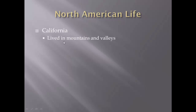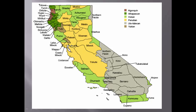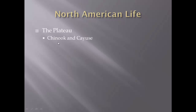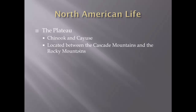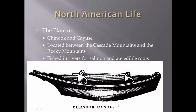North American life in California: they lived in eastern California in the mountains and valleys. Along the coastline it's flat, but moving inland it's mountains and valleys. They ate fish, acorns, and beans — whatever they could. Those living in the plateau, the Chinook and the Cayuse, were located between two mountain ranges, so they were somewhat isolated. They fished in rivers, ate roots, and were famous for the Chinook canoe — Native Americans dug canoes out of trees, and in California they had very large trees for very large canoes.